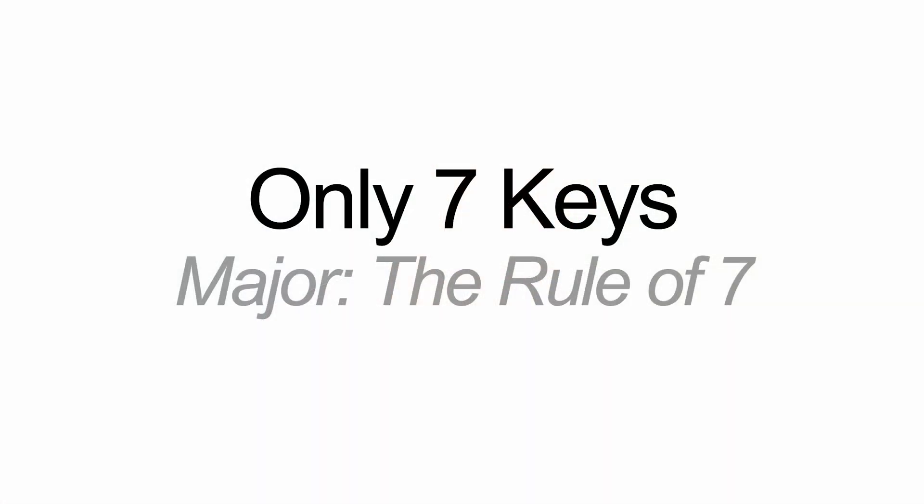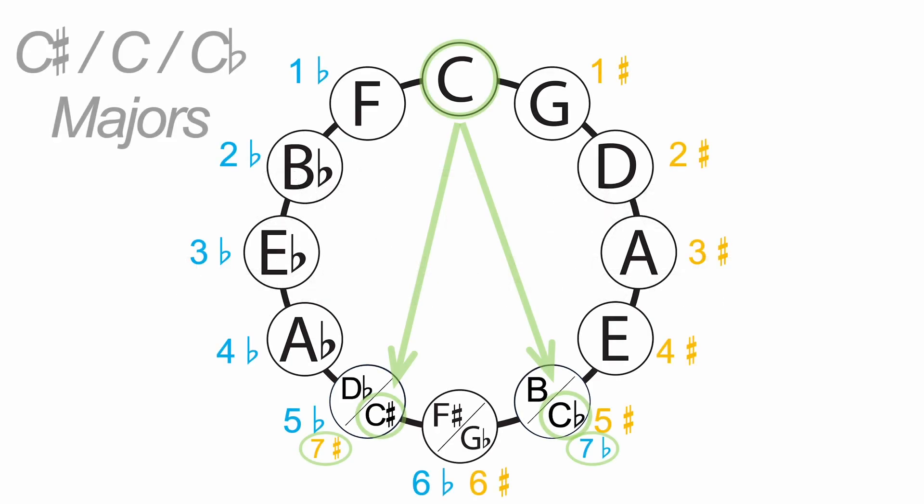Let's start with the seven keys that we need to know. With A major, I'm going to call this the rule of seven — we're going to see the number seven pop up quite a bit when talking about these major keys. Let's start with the relationship between C major and C sharp major or C flat major. C major has no sharps or flats — all of the white notes on the piano. C sharp major has all seven sharps, and C flat has all seven flats.